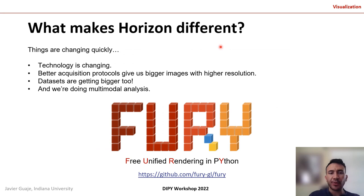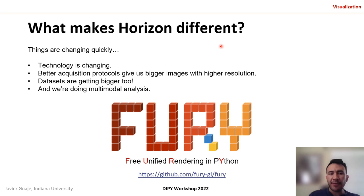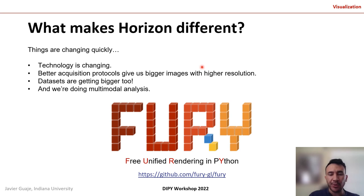We have seen the potential that Horizon gives us when interacting with streamlines, but what else makes Horizon different? Technology is rapidly evolving. OpenGL is transitioning into Vulkan, and other actors are bringing their own ideas to the table. For instance, Apple has succeeded with the development of their own chipsets compatible with their own graphics API, Metal. We also have better acquisition protocols that give us bigger images with higher resolution, and we are trying to do multimodal analysis. To address many of these challenges, we have created Fury — a spin-off of DiPy Horizon with the sole purpose of focusing on visualization.